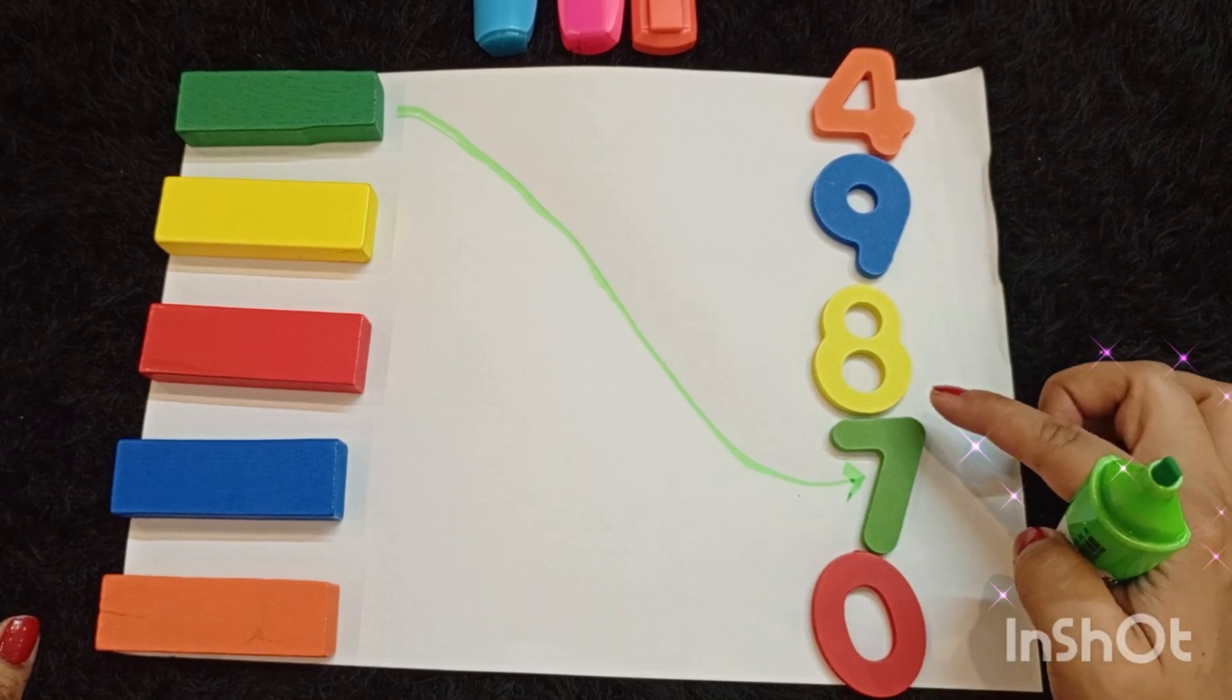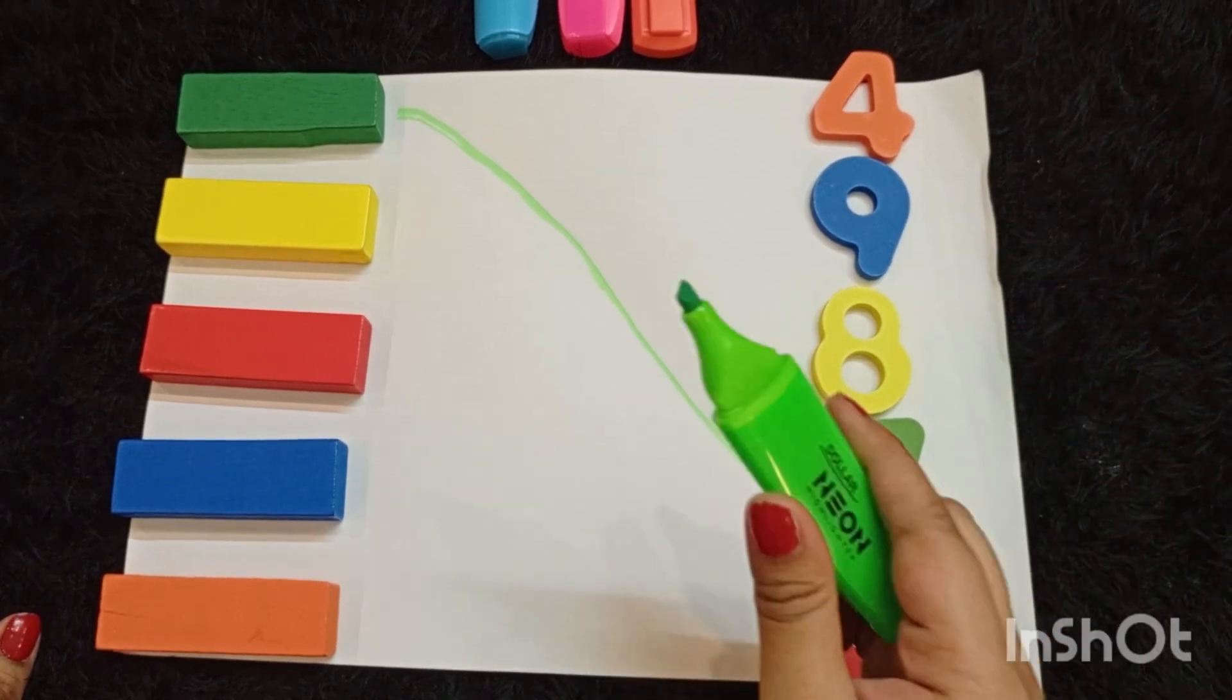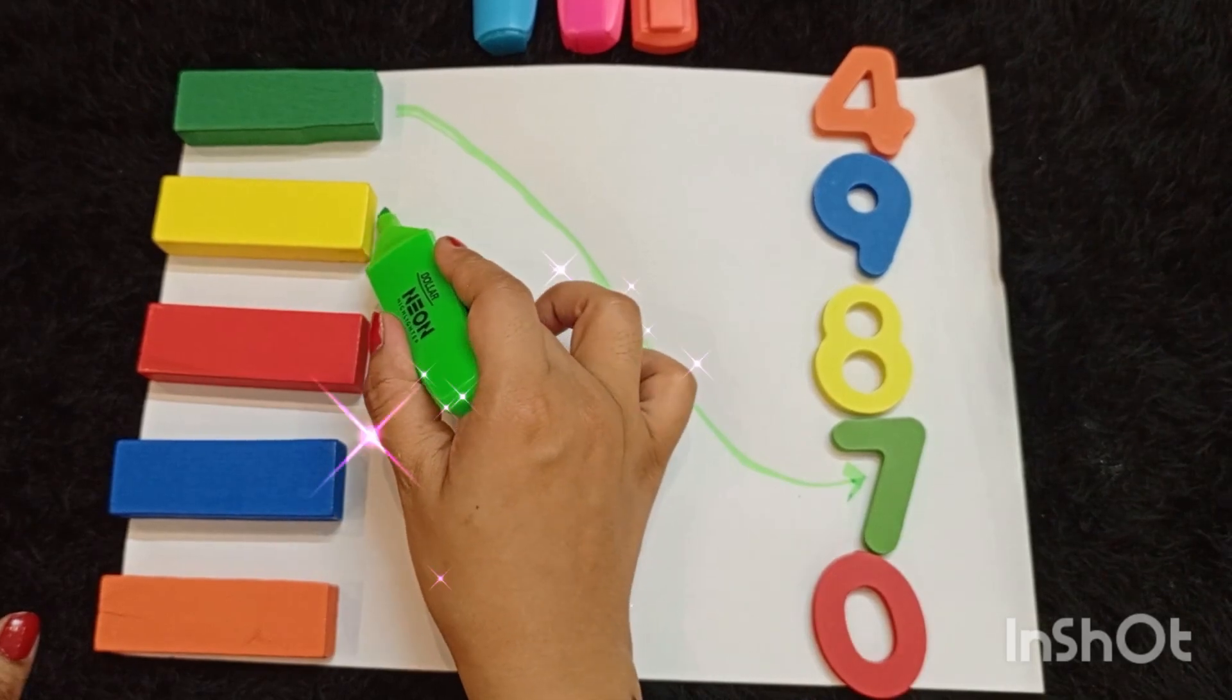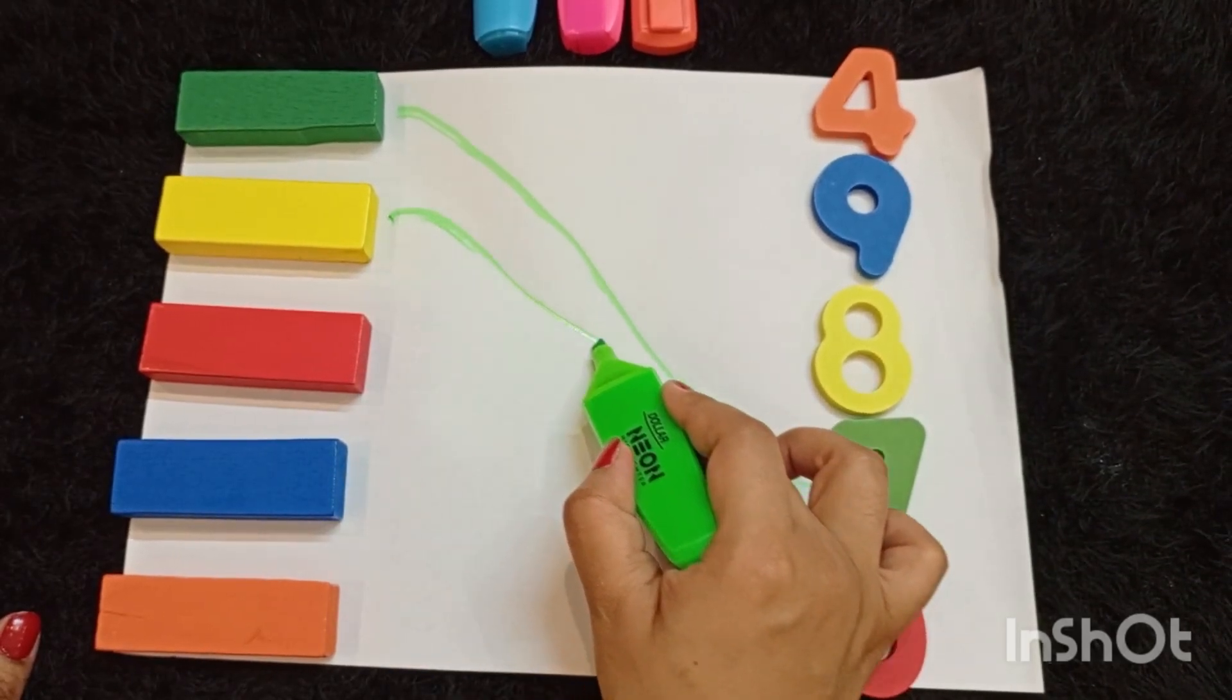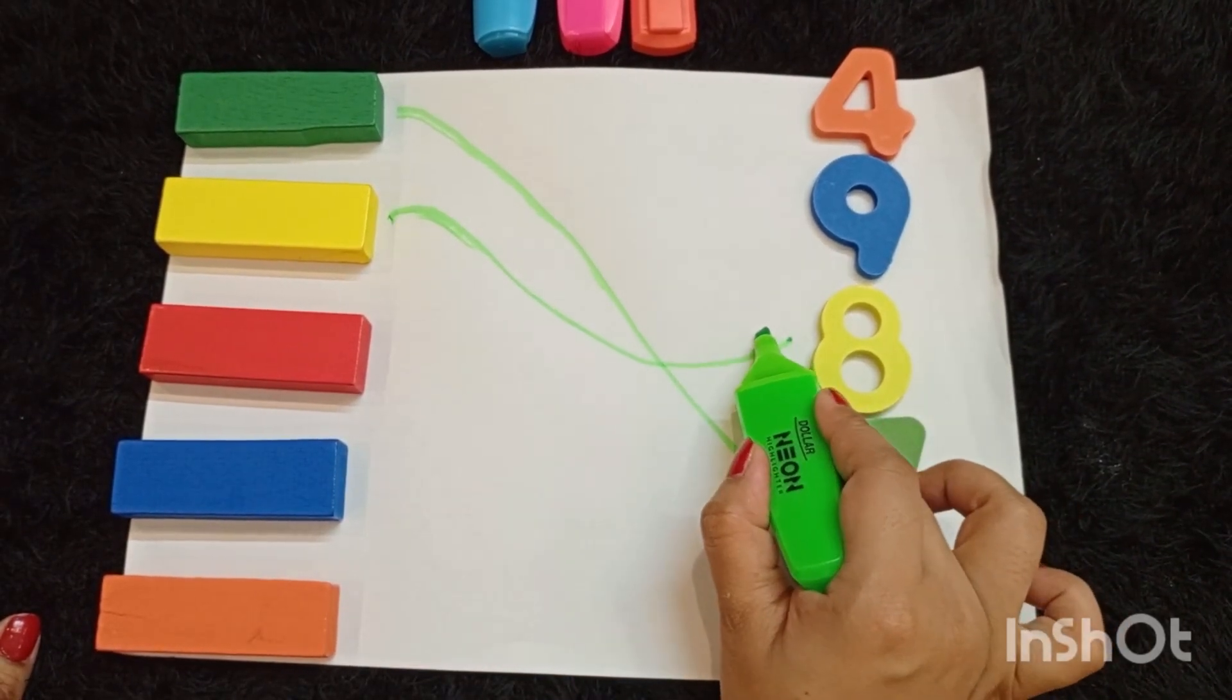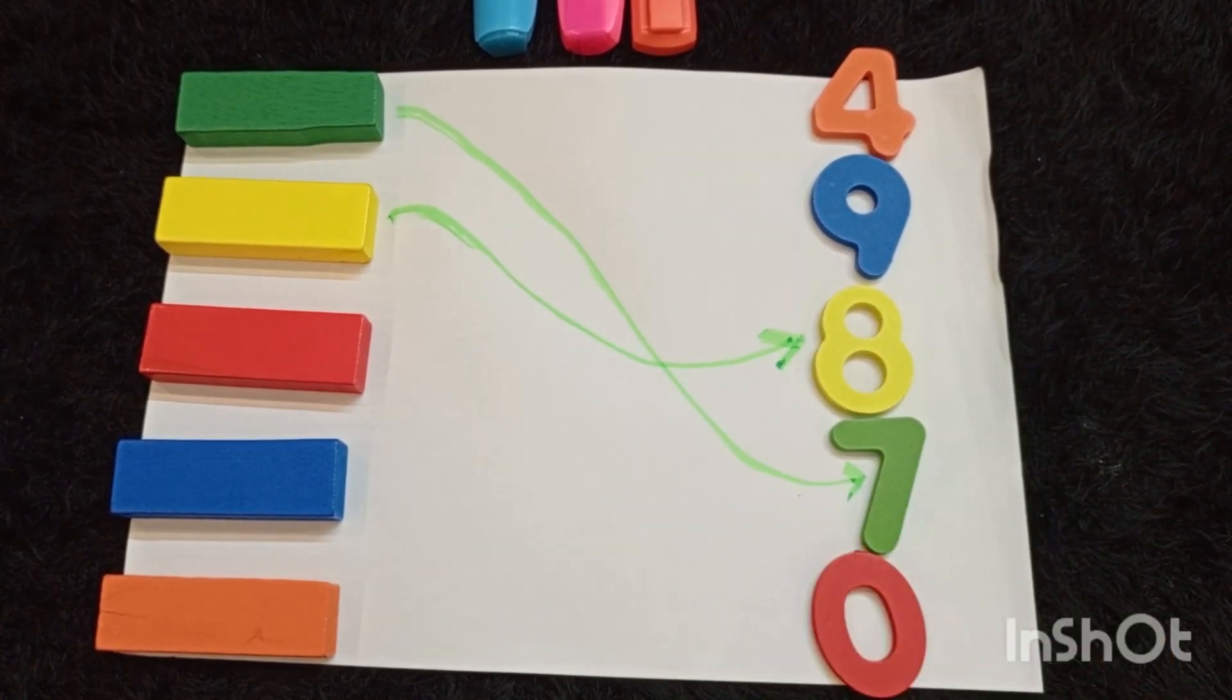The color of number 8 is yellow, so we are going to match the yellow block with number 8.